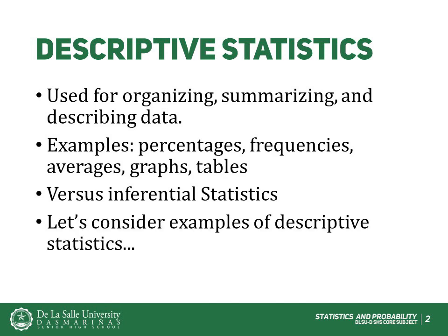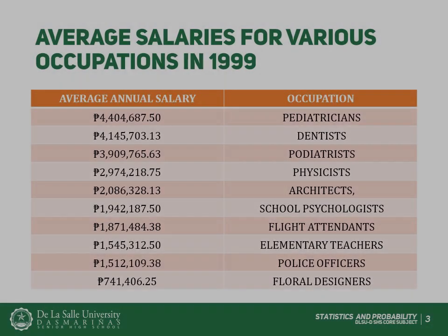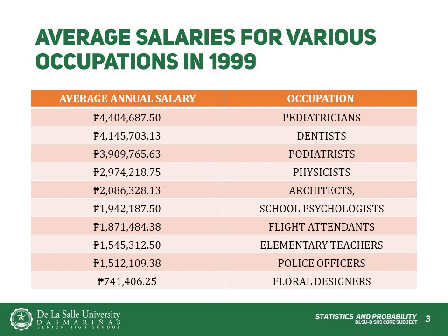Let's consider some examples. This table shows the average salaries for various occupations in 1999. These statistics are referred to as descriptive statistics because, as the name suggests, they describe the data. Descriptive statistics are important and give us a great deal of information — in this case, about the different salaries that individuals make. It is interesting to note, for instance, that we pay the people who educate our children and who protect our citizens a great deal less than we pay people who take care of our feet or our teeth.